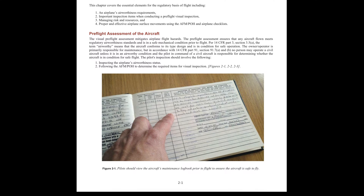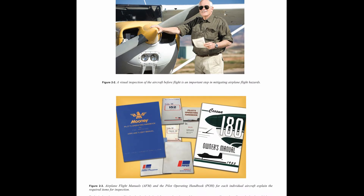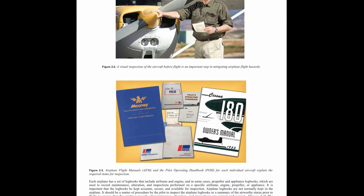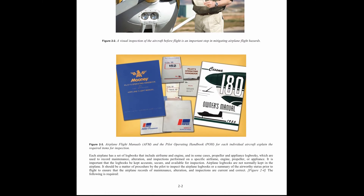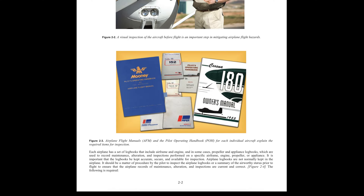The pilot's inspection should involve: 1. Inspecting the airplane's airworthiness status. 2. Following the AFM/POH to determine the required items for visual inspection. Each airplane has a set of logbooks that include airframe and engine, and in some cases propeller and appliance logbooks, which are used to control maintenance, alteration, and inspections performed on a specific airframe, engine, propeller, or appliance. It is important that the logbooks be kept accurate, secure, and available for inspection. Airplane logbooks are not normally kept in the airplane. It should be a matter of procedure by the pilot to inspect the airplane logbooks or a summary of the airworthy status prior to flight to ensure that the airplane records of maintenance, alteration, and inspections are current and correct.